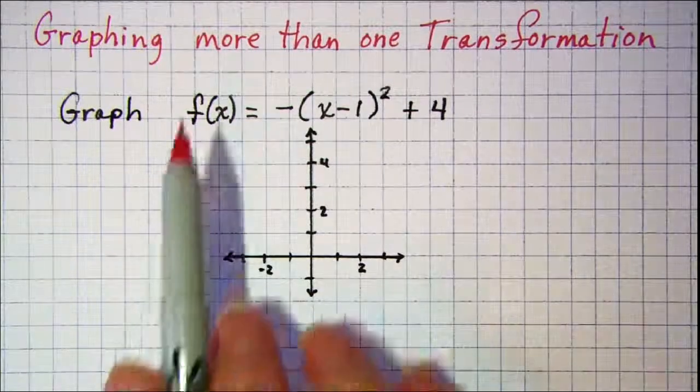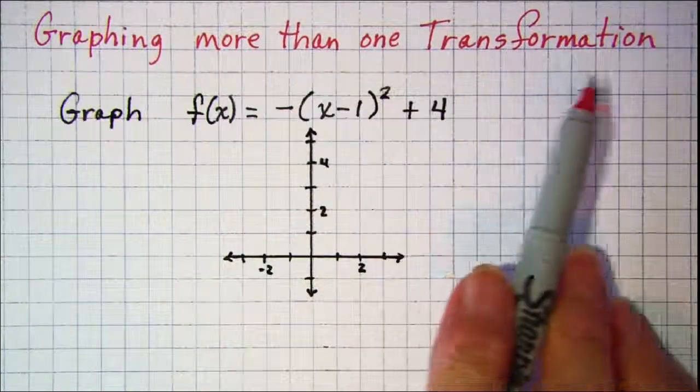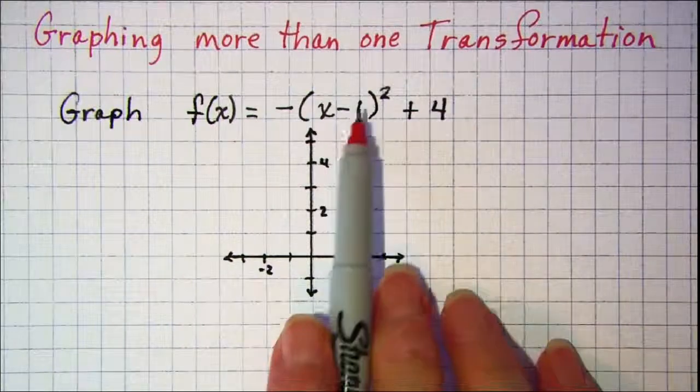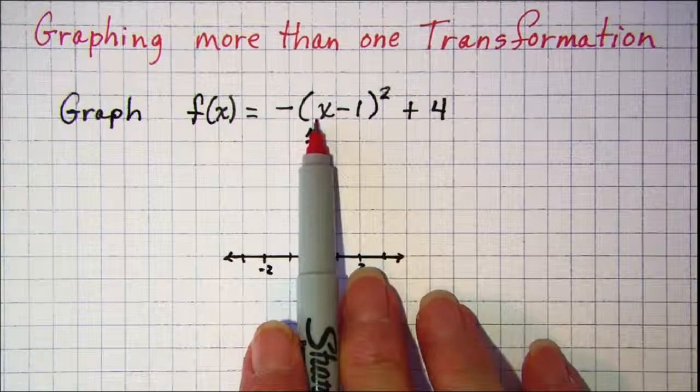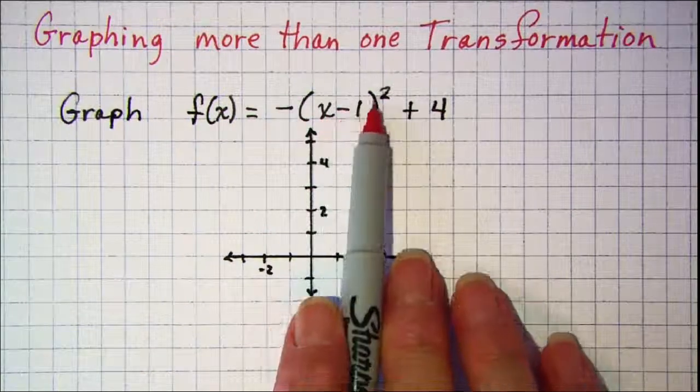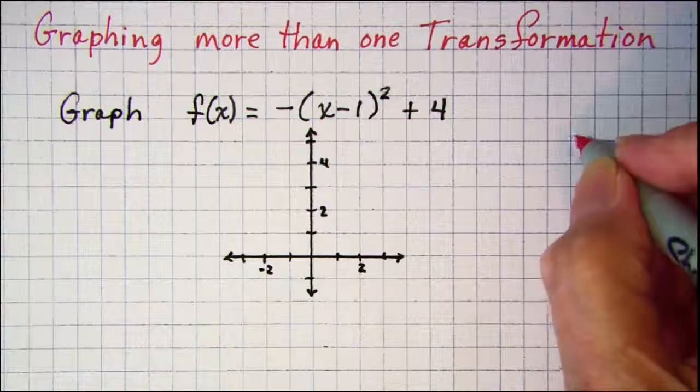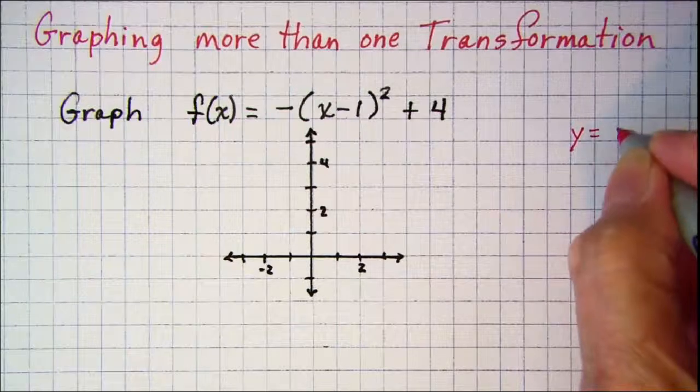In this video we'll be graphing more than one transformation. Here we can see that we have a y equals x squared graph because we have something squared. So our basic graph is y equals x squared.